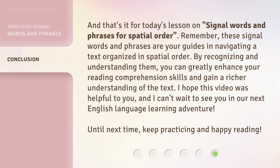And that's it for today's lesson on Signal Words and Phrases for Spatial Order. Remember, these signal words and phrases are your guides in navigating a text organized in spatial order. By recognizing and understanding them, you can greatly enhance your reading comprehension skills and gain a richer understanding of the text. I hope this video was helpful to you, and I can't wait to see you in our next English language learning adventure. Until next time, keep practicing and happy reading.